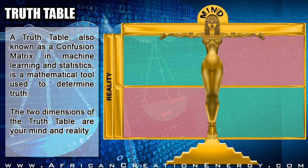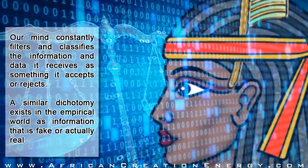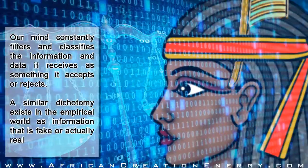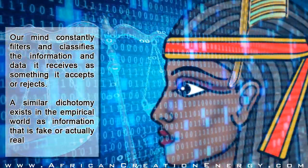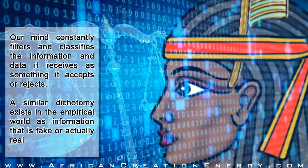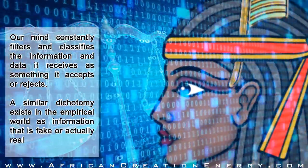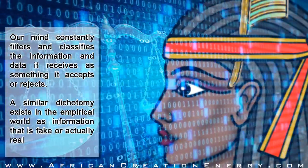In binary classification and boolean algebra, one symbolic mathematical tool used to determine truth is a two-by-two matrix called a truth table, also known as a confusion matrix in machine learning and statistics. The two dimensions of the truth table are your mind and reality — or the abstract and the concrete, or the rational and the empirical, respectively. As we live our lives every day, we constantly take in information, experience evidence, make observations, and gather data. Our mind operates as a metaphorical lie detector, filtering and classifying the information as something we reject as false — something we do not believe — or something we accept as true — something we do believe.